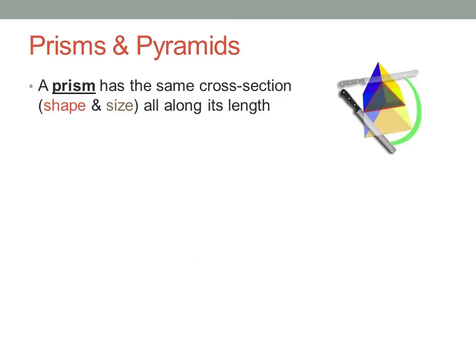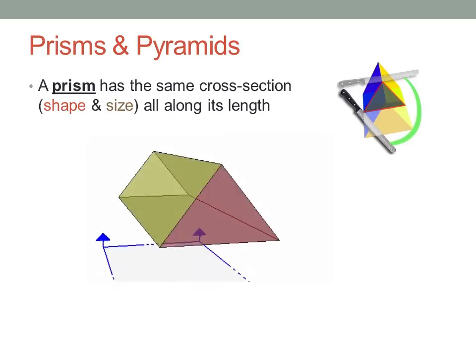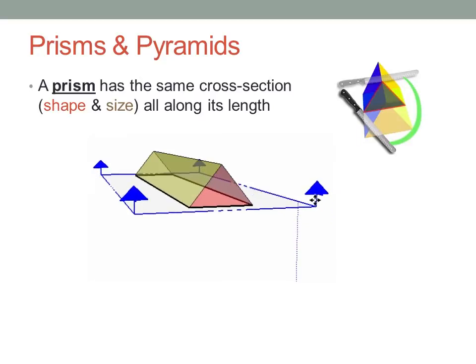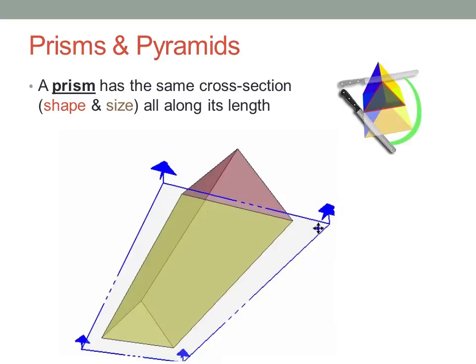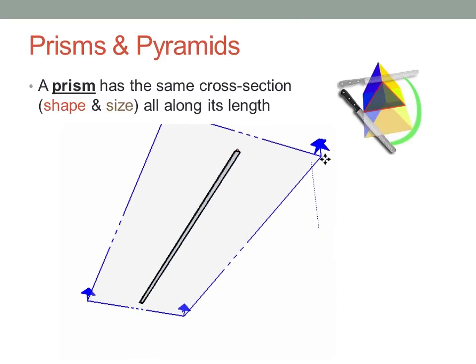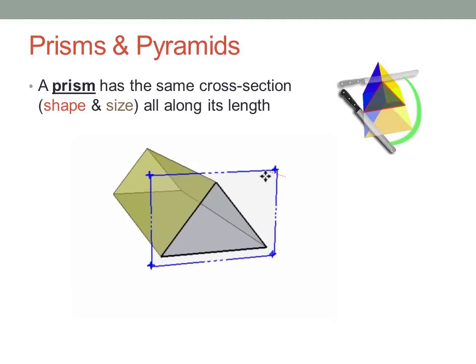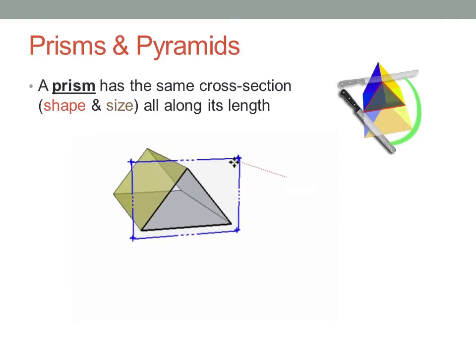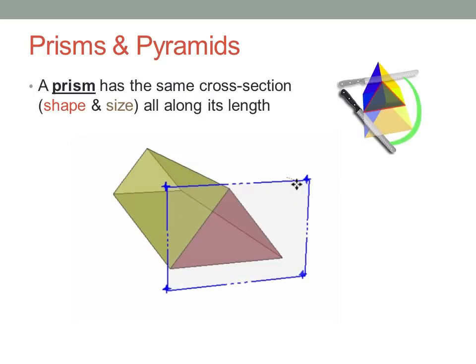Be careful, though – the base may not actually be on the bottom. In this prism, if I try to use the bottom surface, I'll get a rectangular cross-section that gradually reduces in width, but not length, until it becomes a line at the top. But if instead I use the triangular end, look what happens. It's the same triangle all the way along.